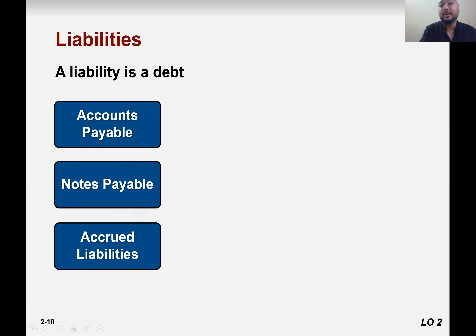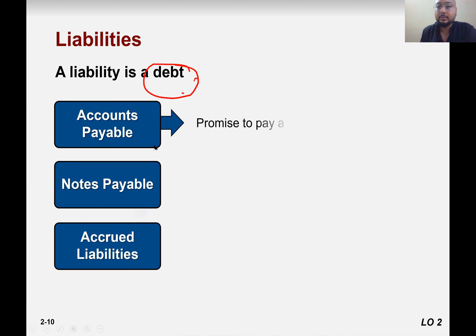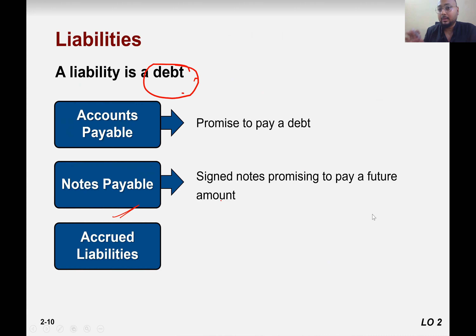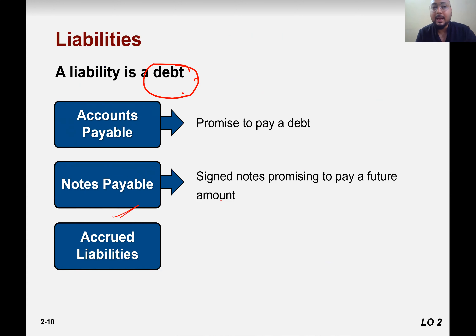A liability is a debt. Liability can be short-term or long-term, current or long-term. Accounts payable is a promise to pay. Similarly, notes payable is also a promise to pay on some future date with interest, signed by a note. Accrued liability — that liability has occurred but you didn't pay. It means you receive the benefit in advance and will pay later. This is the opposite of prepaid. So accrued expenses or accrued liabilities are our liabilities.